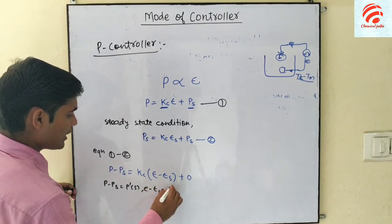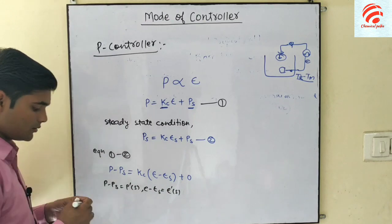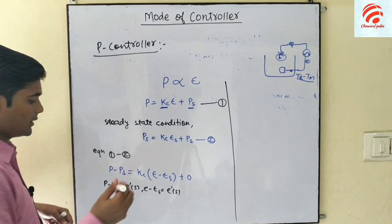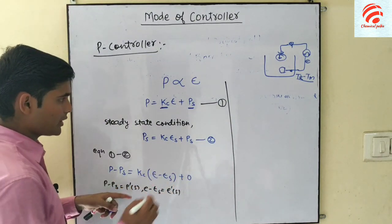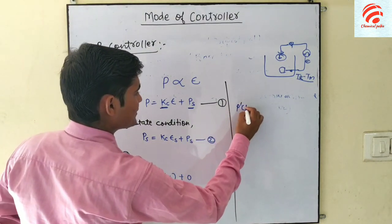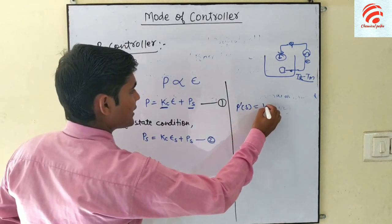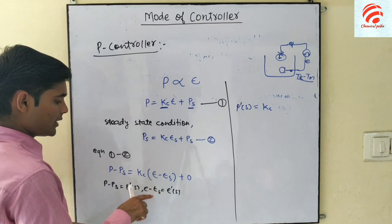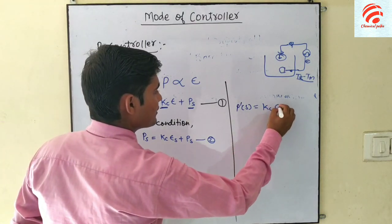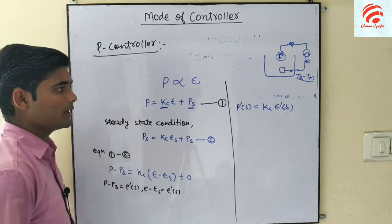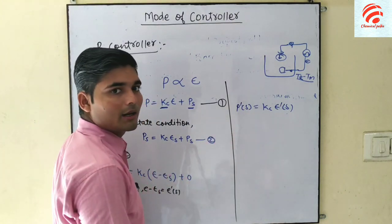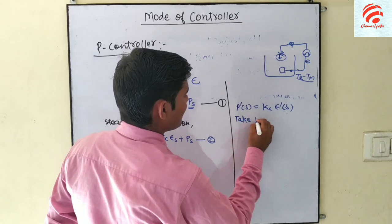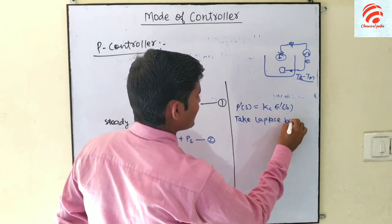B sub s is equal to I minus the minutes value. B dash is equal to K sub s. Taking the Laplace transform on both sides.